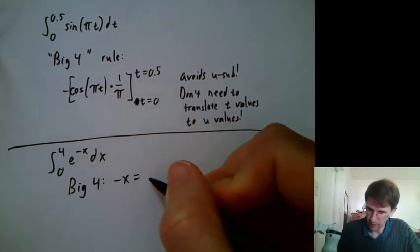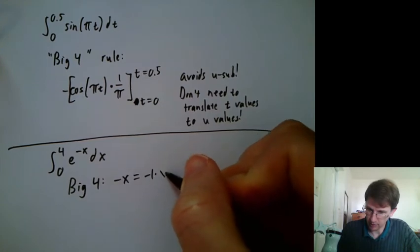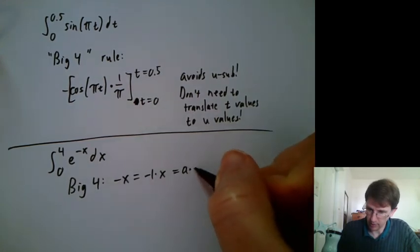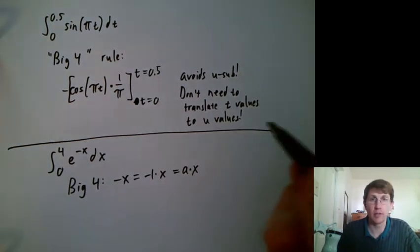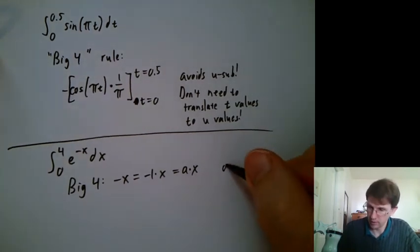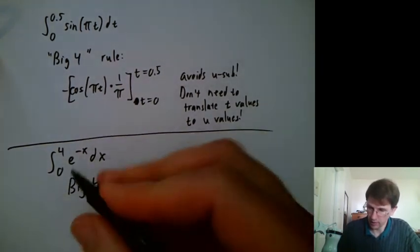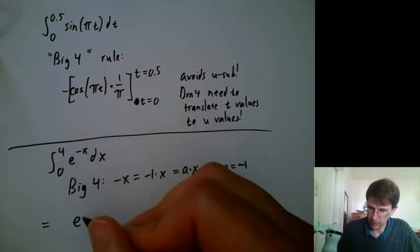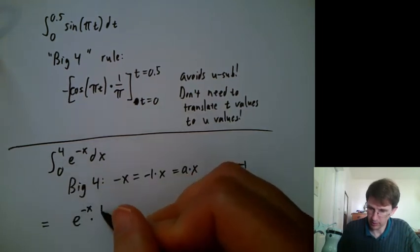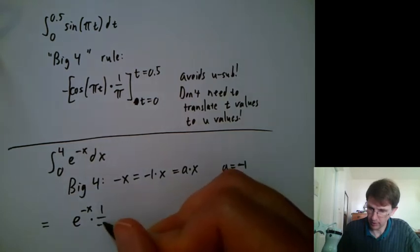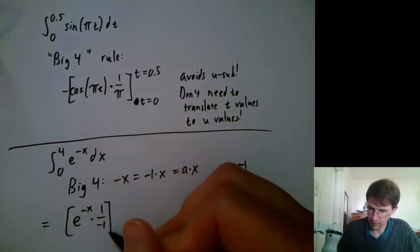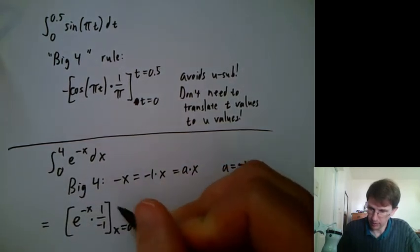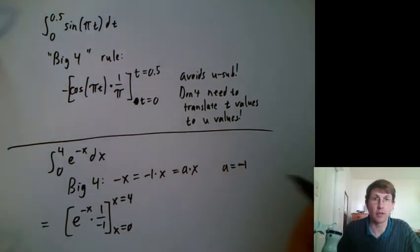So negative x, you could write it as negative 1 times x, which we could say is a times x, where a is a constant, negative 1. So we could say this integral is integral of e to the negative x is e to the negative x times 1 over a, which is 1 over negative 1, from x equals 0 to x equals 4.